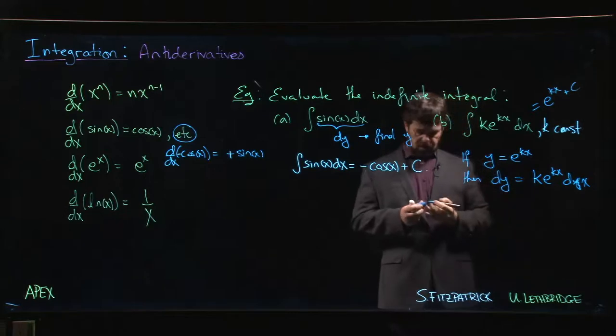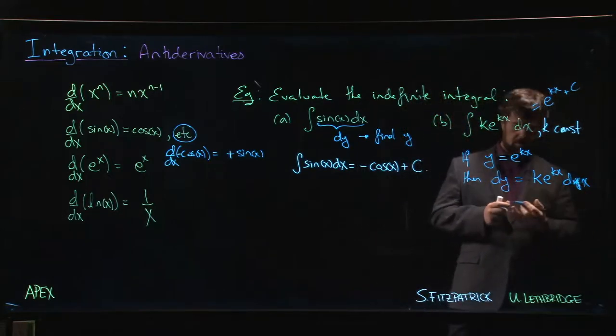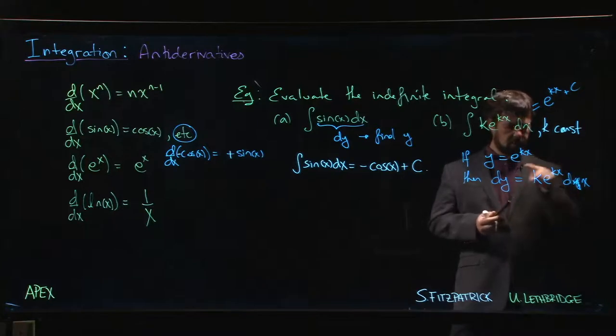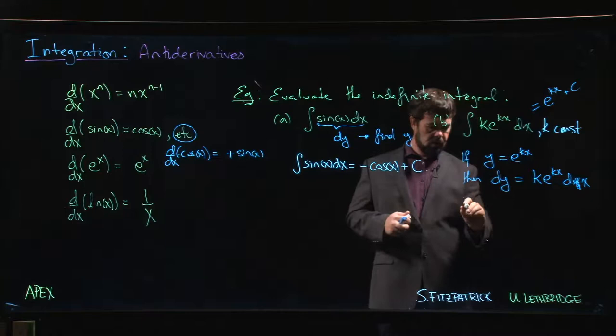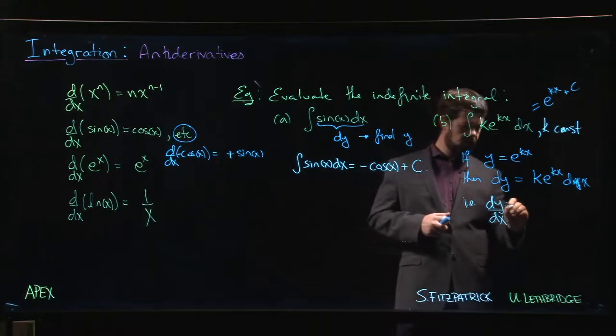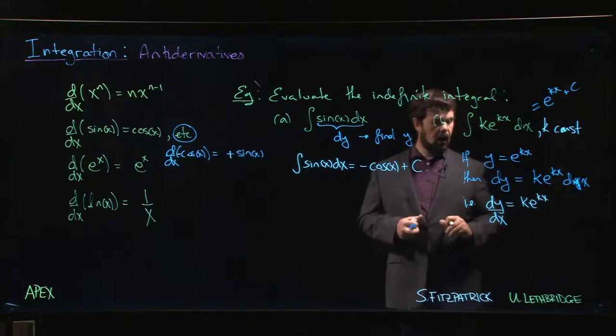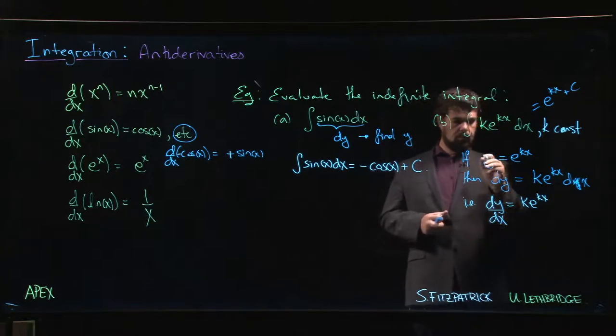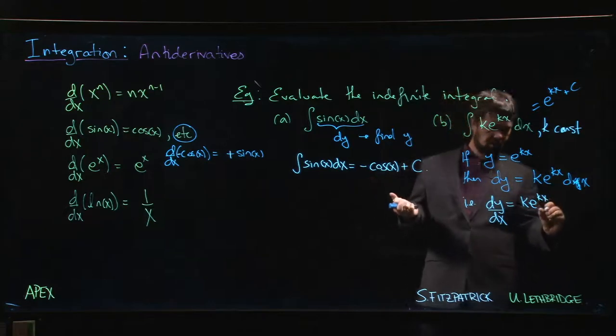Now there's one other thing we want to add here. Another way that we could have rewritten this is we could have said, in other words, dy/dx is k e^(kx). And we said, oh, but e^(kx) was our answer, y equals e^(kx), so we have k times y.